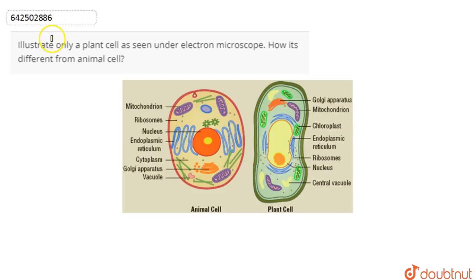In this question, we are asked to illustrate only a plant cell as seen under the electron microscope. How is it different from the animal cell? Here on our screen we can see the diagram of both the plant and an animal cell. When we view any cell under the microscope, we will get to see a structure like this.